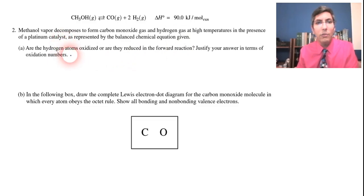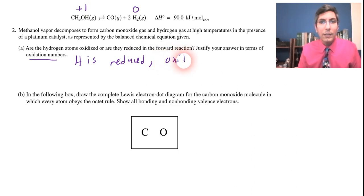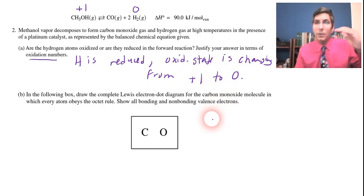In part A, the question asks, are the hydrogen atoms oxidized or are they reduced in the forward reaction? And specifically, it wants us to talk about oxidation numbers. For this one, you want to say that the hydrogen on the reactant side has an oxidation state of positive one. The rule for that is that anytime hydrogen is bonded with non-metals, hydrogen is pretty much going to be a positive one. And over here, hydrogen is in its simple elemental state. So it's a zero. So what you want to say is that hydrogen is reduced, and the explanation is that its oxidation state is changing from a positive one to a zero. Since that oxidation state is going down, that means that it is gaining electrons and it is reduction.